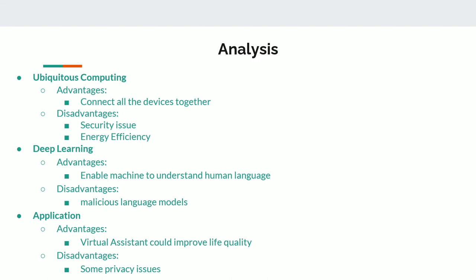In terms of analysis, the first technology is ubiquitous computing. The advantage of this innovation is that ubiquitous computing could connect all devices together and do the processing anywhere. In contrast, ubiquitous computing may have some security issues — for instance, a DDoS attack might disable system functions. Secondly, energy efficiency is also a vital part of the system. Companies use multiple methods to save energy, such as using OLED and optimized scheduling tasks. In terms of deep learning, the advantage is that it enables machines to understand human language. However, it also has weaknesses, especially the malicious language model, which may result in implied language issues.